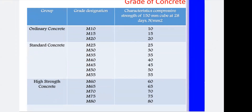Take a screenshot of the grade of concrete. M10, M15, and M20 belong to the group ordinary concrete — this is an important multiple choice question. M25 to M55 is standard concrete. M60, M65, M70, M75, and M80 belong to the highest grade group. 'M' stands for mix proportion, and the number denotes the characteristic compressive strength (fck) at 28 days in N/mm².